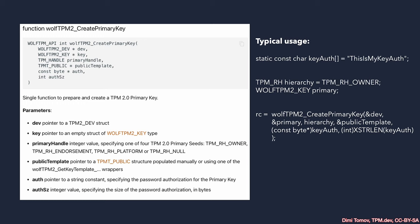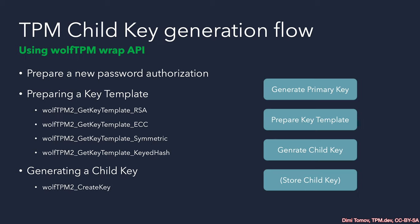With our key template created, we move forward with key generation. Two more important parameters: we need key authorization — the simplest form is password authorization, requiring a string and its size, which is embedded into the key as a requirement. We also need to specify the hierarchy, which is usually the owner hierarchy. We need a variable to hold the result of the operation. Remember, primary key material does not leave the TPM — the private part remains inside, and we receive only a handle, an index to where the primary key lives. The public part is provided to us as part of the command response.